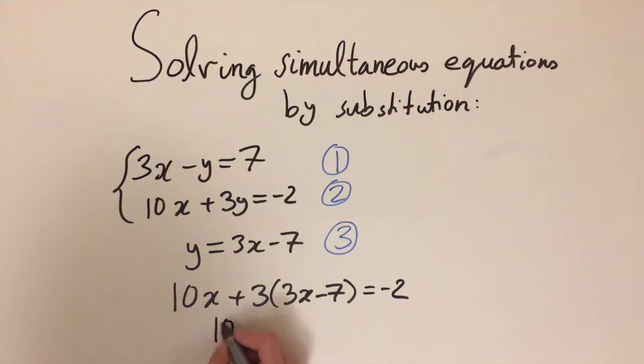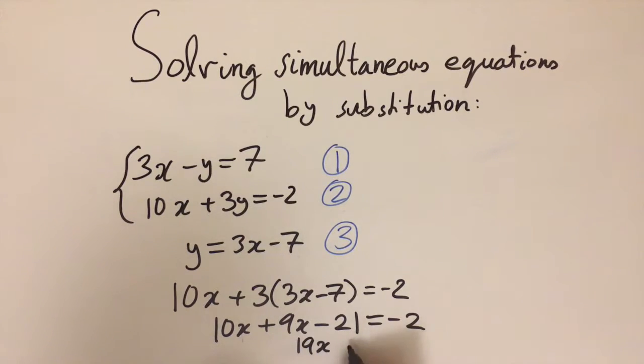We can expand out the brackets: 10x plus 9x, and 3 times 7 is 21, so minus 21, and this equals minus 2. Let me collect the terms and we'll have 19x equals... we move the 21 onto that side and we get 19. So divided by 19 we get x equals 1.